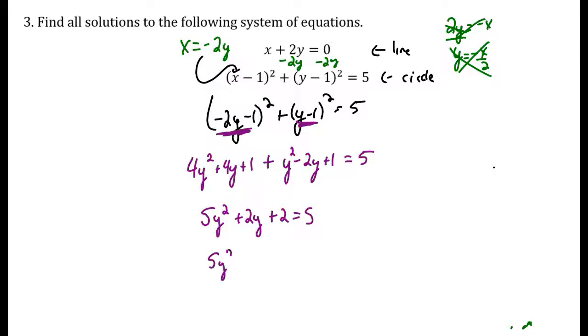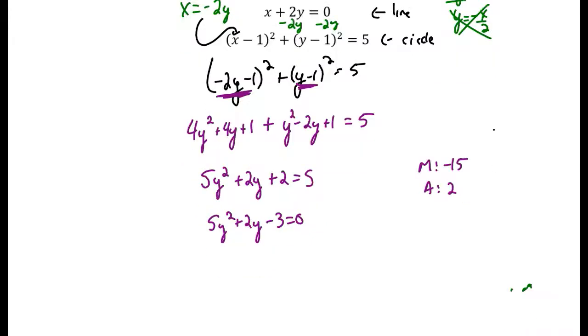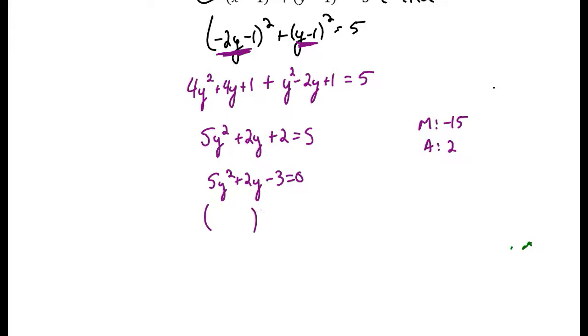Setting things equal to 0 to solve the quadratic, I get 5y squared plus 2y minus 3 equals 0. And I ask myself, self, what multiplies to negative 15, that adds to 2? What multiplies to negative 15, that adds to 2? I can't just make two parentheses, I have to group here. My factors would be 5 and negative 3.